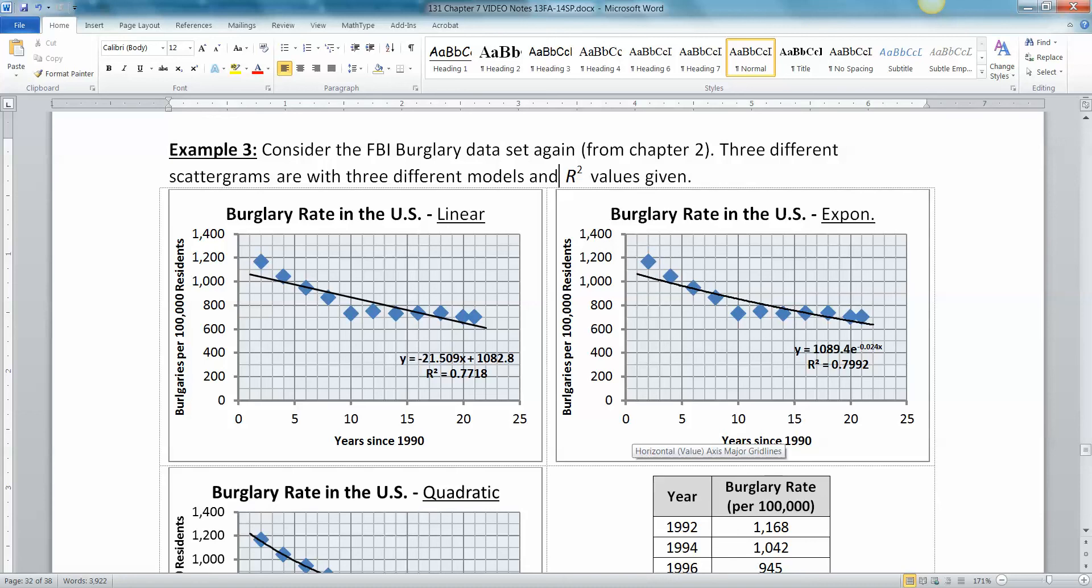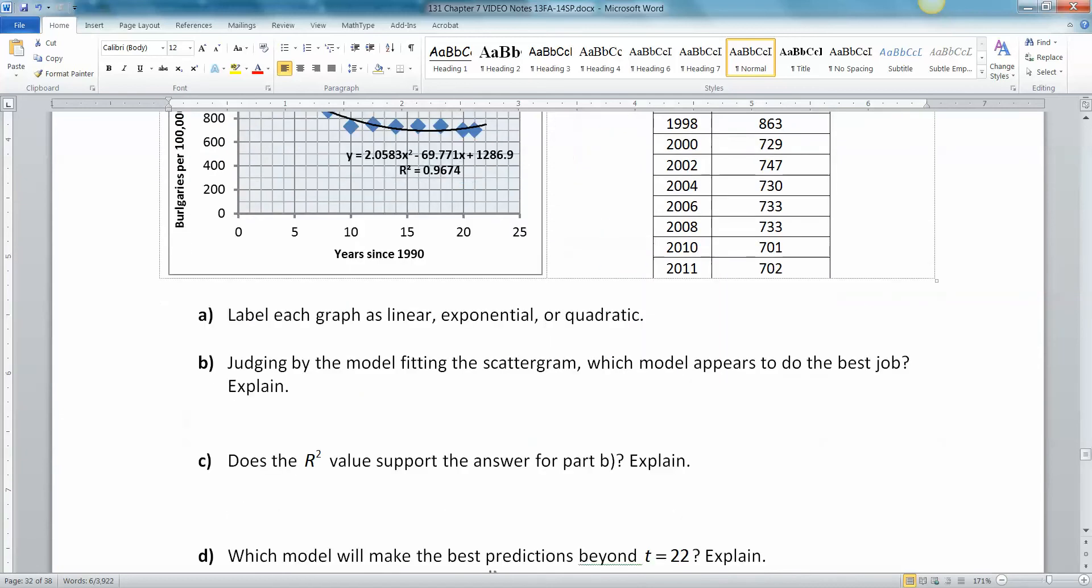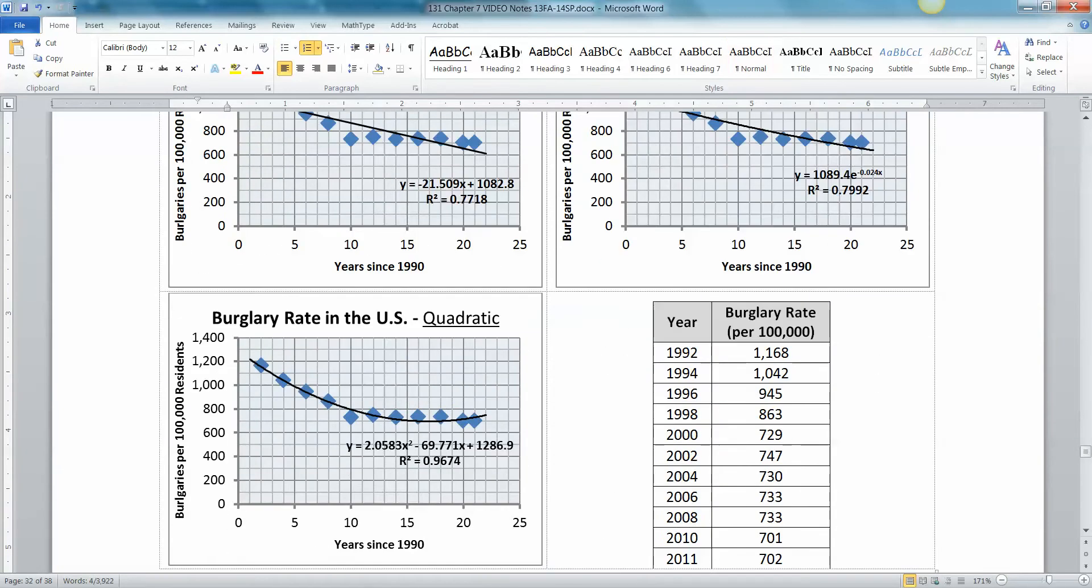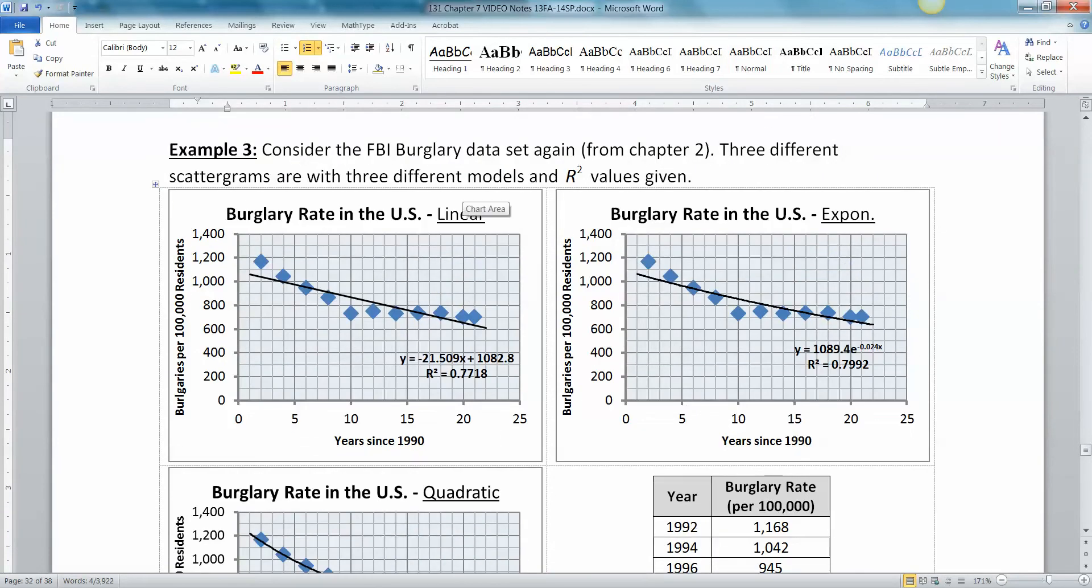Continuing on in section 7.7, let's consider the FBI burglary data set that was first given to us in chapter 2. We have three different scattergrams with three different models, and their respective R squared values are given. Our first job was to label each one as linear, exponential, or quadratic.